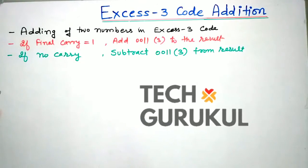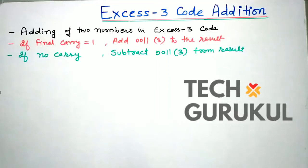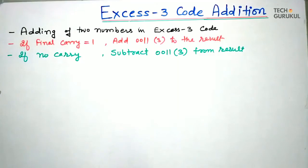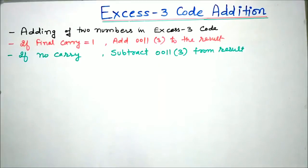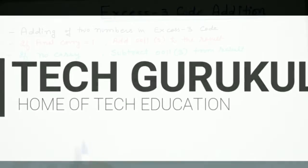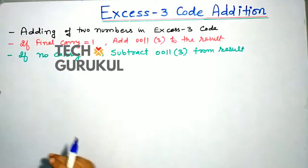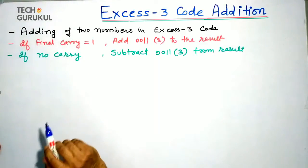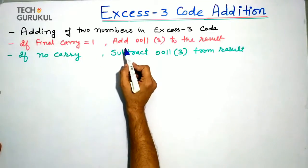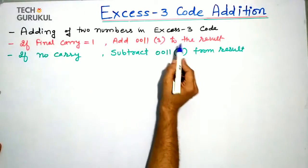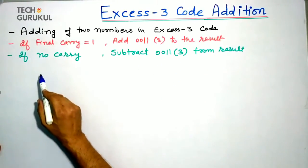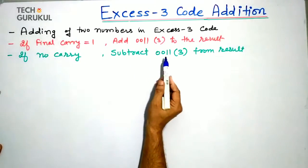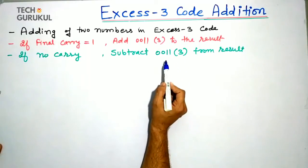In the last lecture we did XS3 code representation — how we convert a decimal number into XS3 code. In this lecture, we will study the addition of two numbers in XS3 code. When we add, if there is a final carry of 1, then we add 3 (0011) to the result. If there is no carry, then we subtract 3 (0011) from the result.